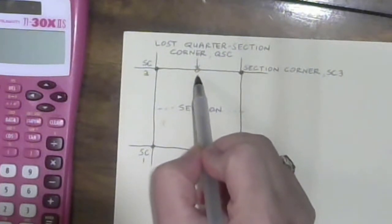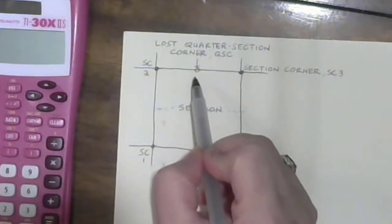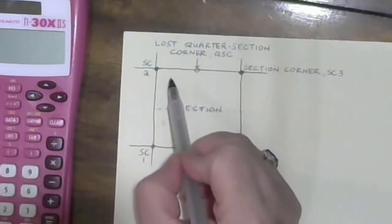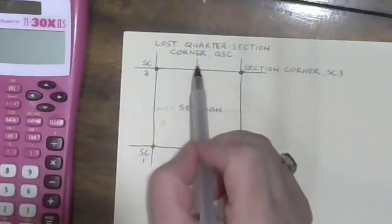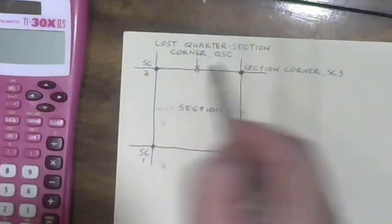Now remember lost is different than obliterated. Lost means that we don't have field notes, we don't have it mentioned in deeds, but we know that it's supposed to be there because it's the public land survey system.